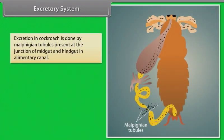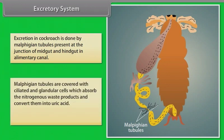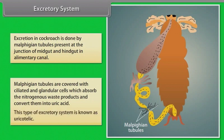Excretory System. Excretion in cockroach is done by Malpighian tubules present at the junction of midgut and hindgut in the alimentary canal. Malpighian tubules are covered with ciliated and glandular cells, which absorb the nitrogenous waste products and convert them into uric acid. This type of excretory system is known as uricotelic.